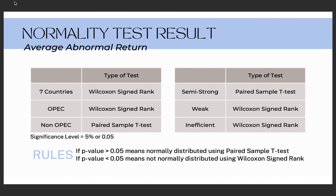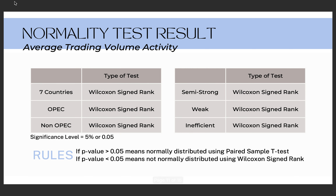The normality test results for average abnormal return data show that most categories use the Wilcoxon signed-rank test, and the rest — which are non-parametric and semi-strong form — used the paired sample t-test. The normality test results for average trading volume activity data show that all categories use the Wilcoxon signed-rank test.